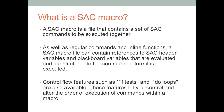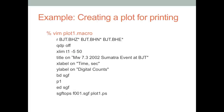Moving on, next we'll talk about SAC macros. The examples so far are useful for 1 to 15 waveforms, but it's increasingly common to deal with hundreds of stations. A SAC macro is simply a text file containing a set of SAC commands to be executed together. SAC macros can take regular SAC commands and inline functions, contain references to SAC header variables and blackboard variables, and can have control flow features such as if tests or do loops.